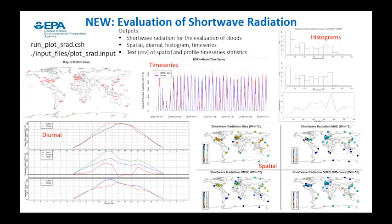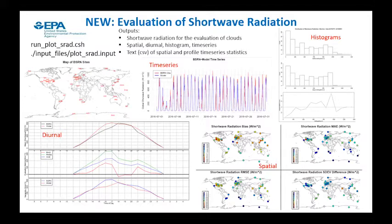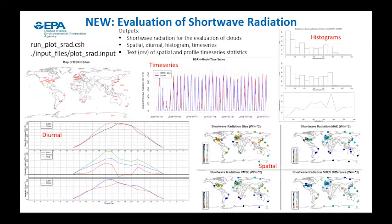The next script is shortwave radiation. For this we include the BSRN sites, and since we're getting into global modeling, we want to evaluate the model over the whole world. There are a lot of sites in the US that are part of the SURFRAD network. You can do time series at a specific site of model and observed shortwave radiation, do diurnal plots, spatial plots of bias and mean absolute error, and look at histograms of the modeled and observed shortwave radiation distribution to see if your model is biased on the low or high end of observed radiation.